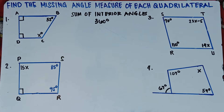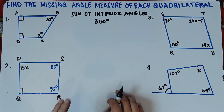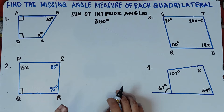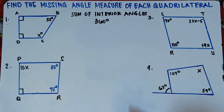We have 4 examples for you to really understand how to solve this. Especially for number 3 and 4, this will be quite complicated. But do not be worried because we will be explaining this one step by step. Now you need to remember that in a quadrilateral, the sum of interior angles should be 360 degrees.